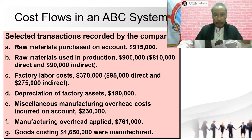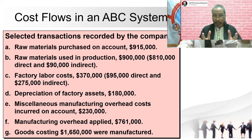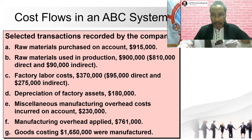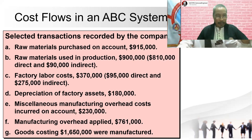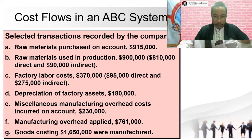Also, cargo operators and warehouse workers who transport products from one place to another are also indirect labor. They are important, but warehousing does not make a cell phone — they are just properly storing the cell phone. Transaction D: depreciation of factory assets, $180,000. Transaction E: miscellaneous manufacturing overhead cost incurred on account, $230,000. Miscellaneous is a technical accounting term meaning other costs.